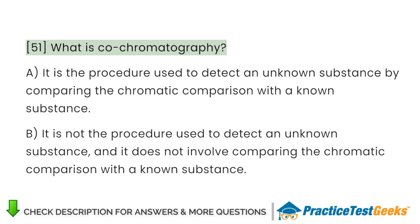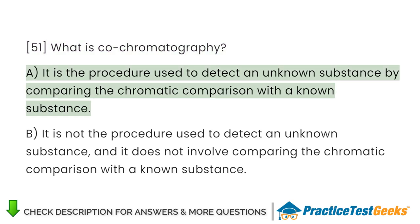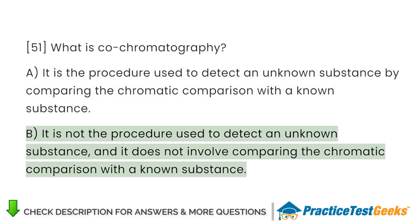What is co-chromatography? A. It is the procedure used to detect an unknown substance by comparing the chromatographic pattern with a known substance. B. It is not the procedure used to detect an unknown substance and it does not involve comparing the chromatographic pattern with a known substance.